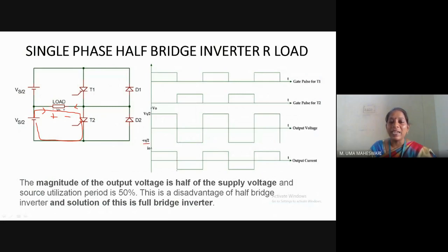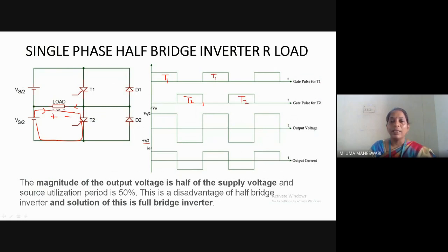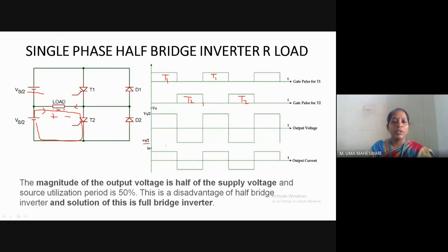After the T2 conduction interval, thyristor T1 is again given the gating pulse and the cycle repeats. Whenever thyristor T1 conducts, the output voltage is positive; whenever thyristor T2 conducts, the output voltage and current are negative. In this manner, DC is converted into a square wave AC. The DC can be varied by modulating the pulse width using pulse width modulation techniques. This is the output waveform for the single phase half bridge inverter with R load.